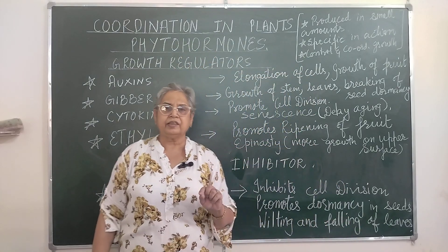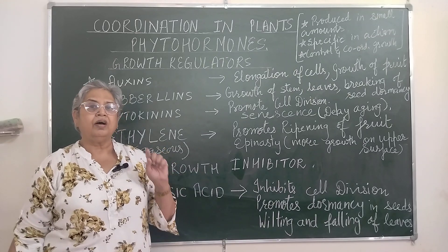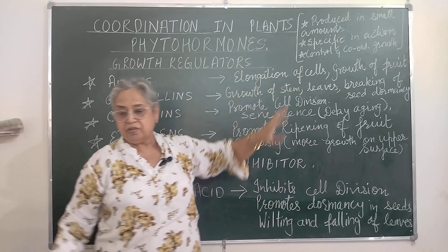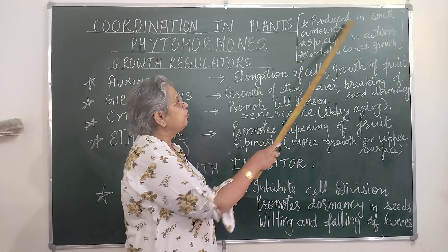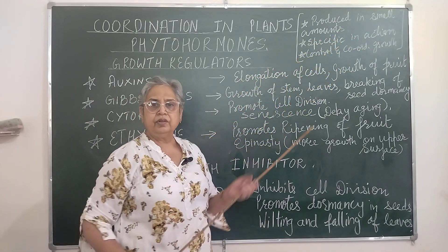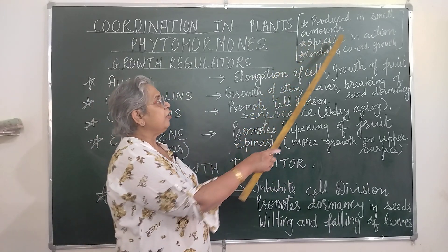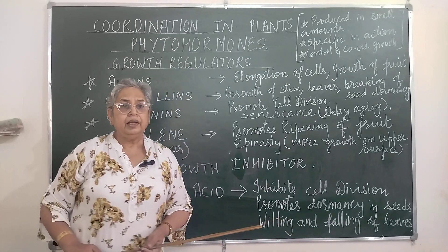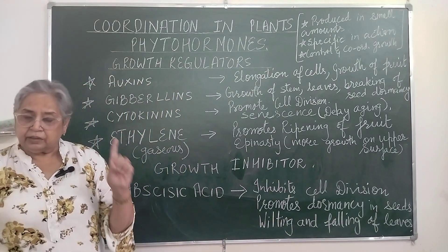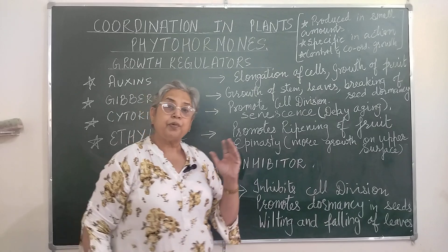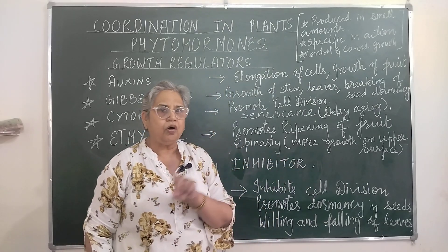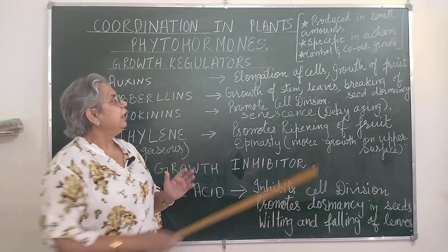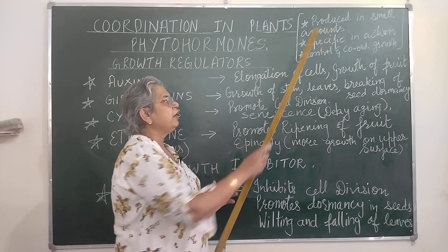Now the basic characteristics of hormones are as follows. When we talk about phytohormones, they are always produced in small amounts, and they are specific in their action. They are produced at some other site — the site of production and the target are not the same. But they flow into the sap and they target their specific part.